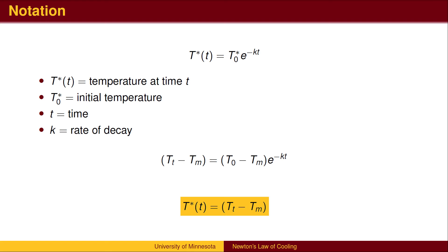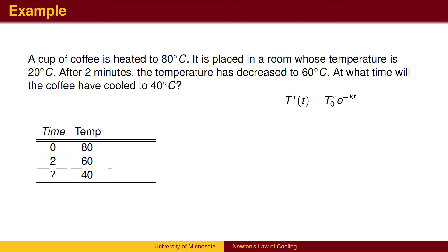To calculate the temperature above room temperature at time t, we need to know the initial difference between our object and room temperature. We use T* to denote temperature above room temperature. We can solve problems using the exponential model.